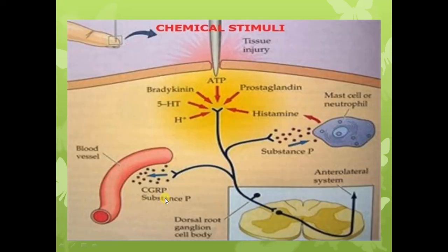This diagram shows the various stimuli which can give rise to pain sensation, mainly the chemical stimuli. We talked about histamine, bradykinin, substance P, and serotonin, which can all cause pain sensation.